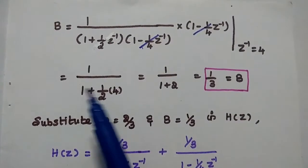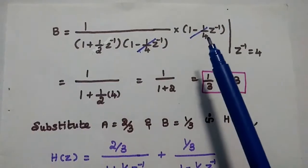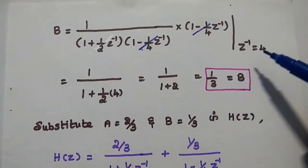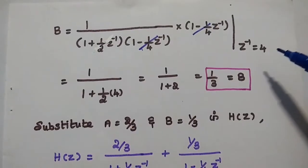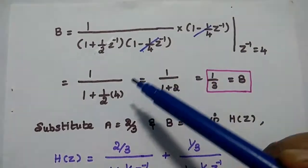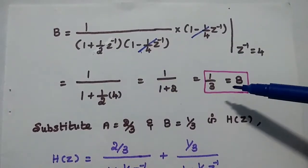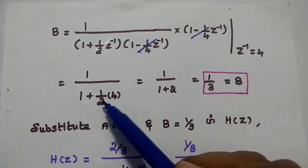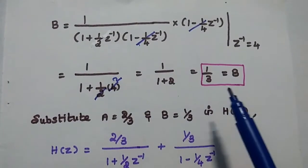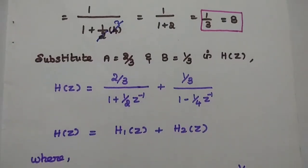Similarly, to find the value of B, we multiply H of Z with the term (1 minus 1/4 Z power minus 1) with the condition Z power minus 1 equal to 4. These two terms cancel each other, giving 1 divided by (1 plus 1/2 times 4), which equals 1 divided by 3. After finding the values of A and B, we substitute them into H of Z.